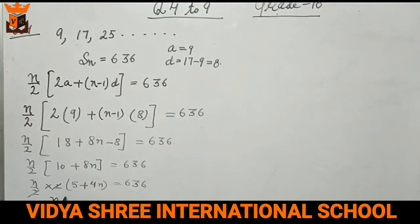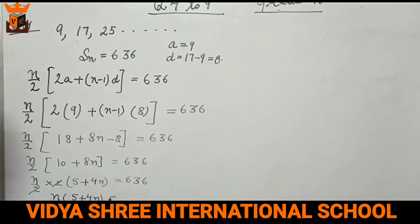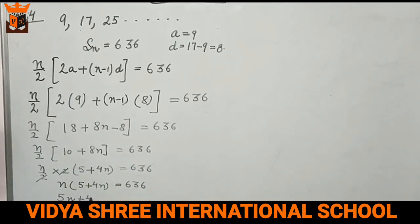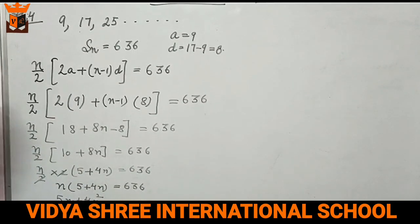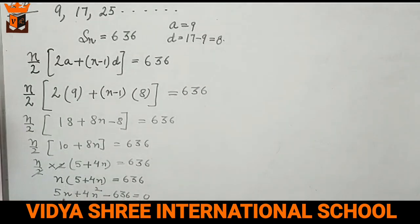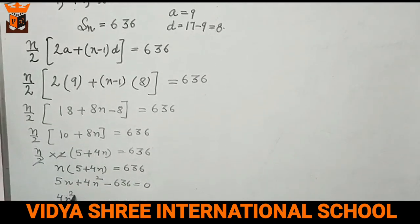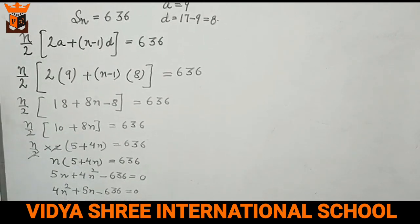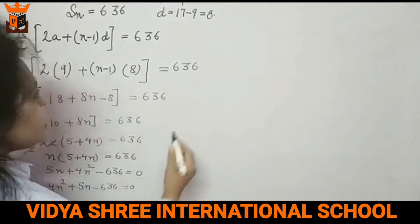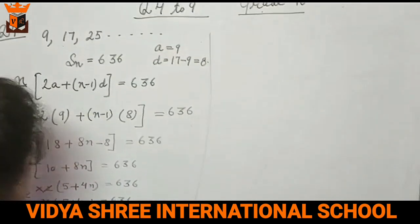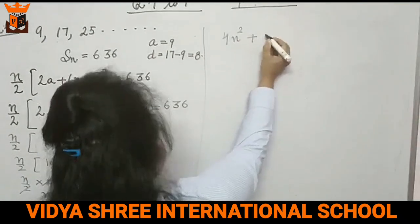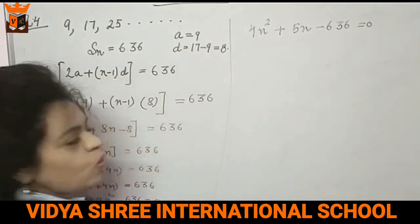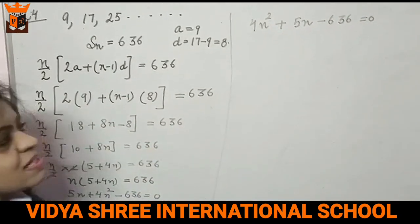2 and 2 cancel. So n times (5 plus 4n) is equal to 636. Multiplying we get 5n plus 4n square, and minus 636 is equal to 0. So the equation is 4n square plus 5n minus 636 is equal to 0. And we will solve it now by quadratic formula because it is a tough equation.